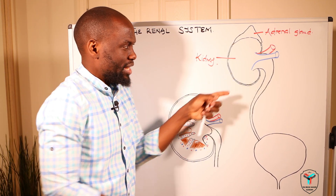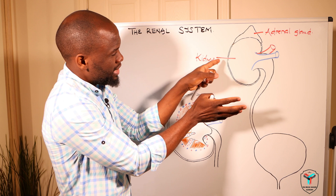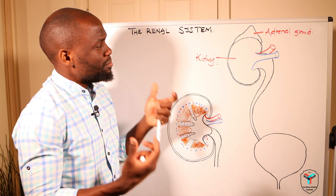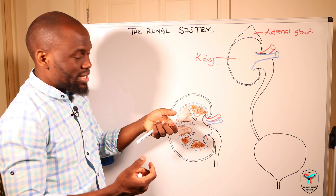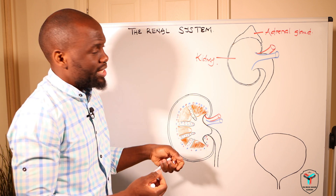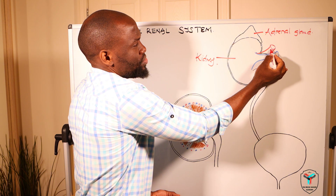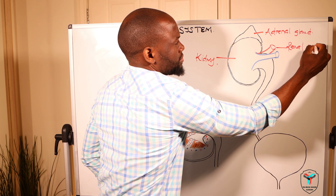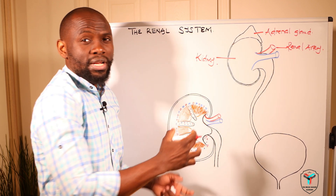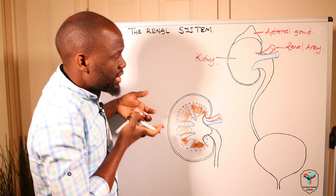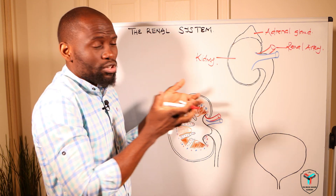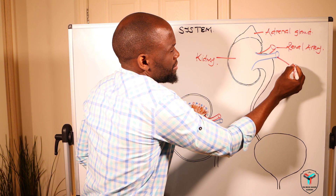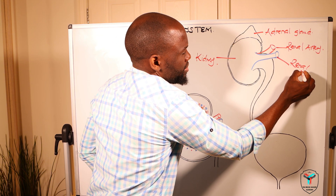The kidney is supplied with blood via a branch emanating from the descending aorta — the abdominal aorta — and this red portion is what you're going to call the renal artery. The blood that comes through to the kidney will then make its way out because it needs to be oxygenated, so it reverts back to the rest of circulation via the renal vein.